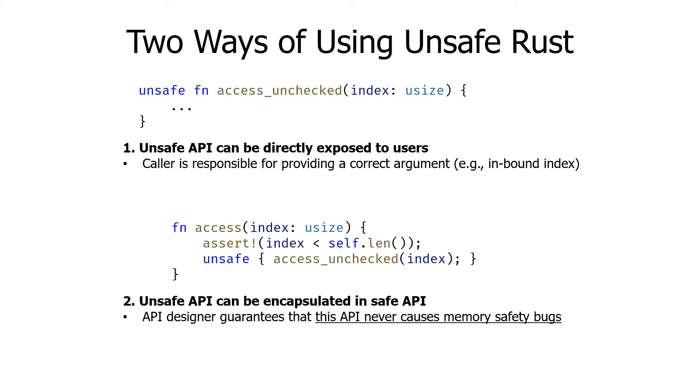Unsafe Rust can be represented in two ways. First, unsafe APIs can be directly exposed to users. In this case, the caller is responsible for providing a correct argument, and the caller needs to use the unsafe keyword to call this function.